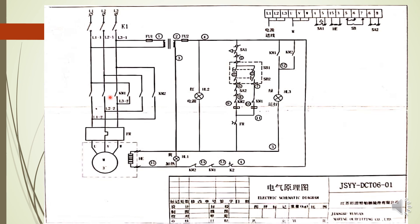Once the KM1 contactor coil energizes, the contactor closes, power transfers through the OLR to the motor, and the motor starts rotating anti-clockwise — ladder comes up. For lowering operation, pressing SB2 sends power to the KM1 normally closed contact (51-52 or 31-32), which is the interlock for KM2. Since KM1 contacts are closed, power reaches the KM2 contactor coil, KM2 energizes, its contacts close, and with two phases already swapped, the motor rotates clockwise — ladder goes down.